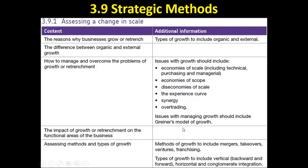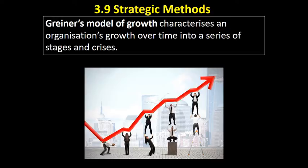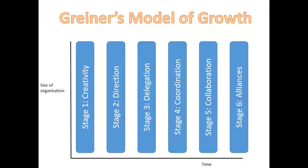Greiner's model of growth is listed on the specification, and it's a model that essentially looks at the different stages of an organisation's growth over time. Greiner is a US academic researcher who looked into a number of different businesses and identified these different stages of growth, looking from small to large businesses, and looking at characteristics in terms of things like how the organisation is structured, the different job roles people are carrying out, the way the business communicates. These different stages of growth each come to an end where there's a particular crisis, and the crisis is unique to each stage of development.